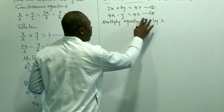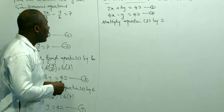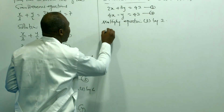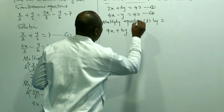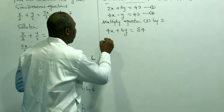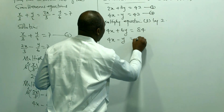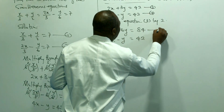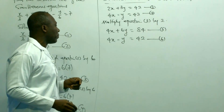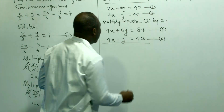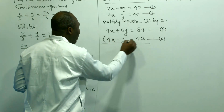So we multiply equation 3 by 2, and equation 4 stays the same. Let's call the new equation 5 and equation 6. Can you now see that the coefficients of x are the same?